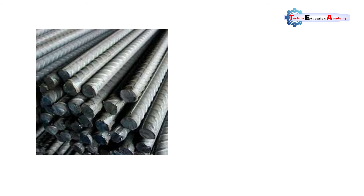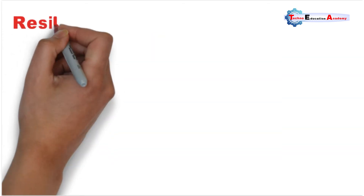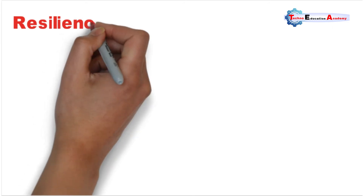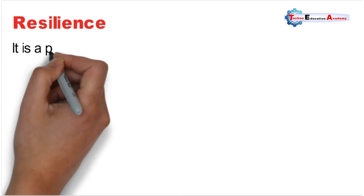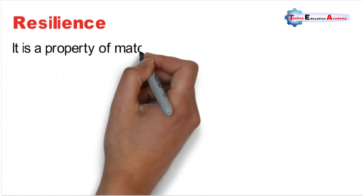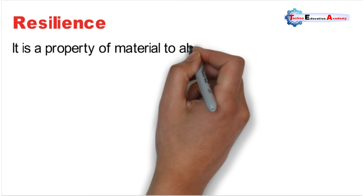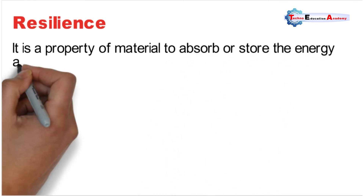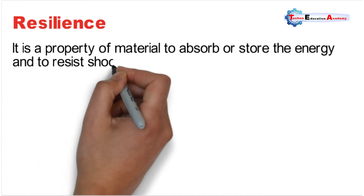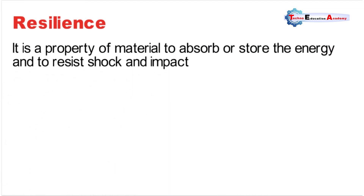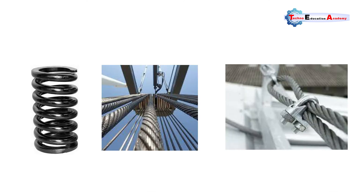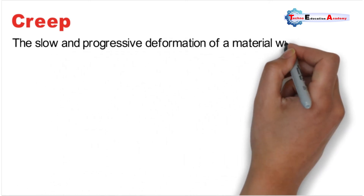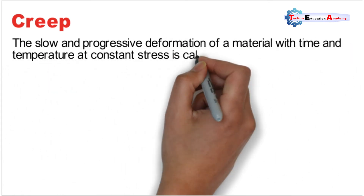The next property is resilience. Resilience is the capacity of a material to absorb or store energy and to resist shock and impact. It is measured by the amount of energy absorbed per unit volume in straining a material up to its elastic limit. This property is important in materials used for springs and wire ropes.